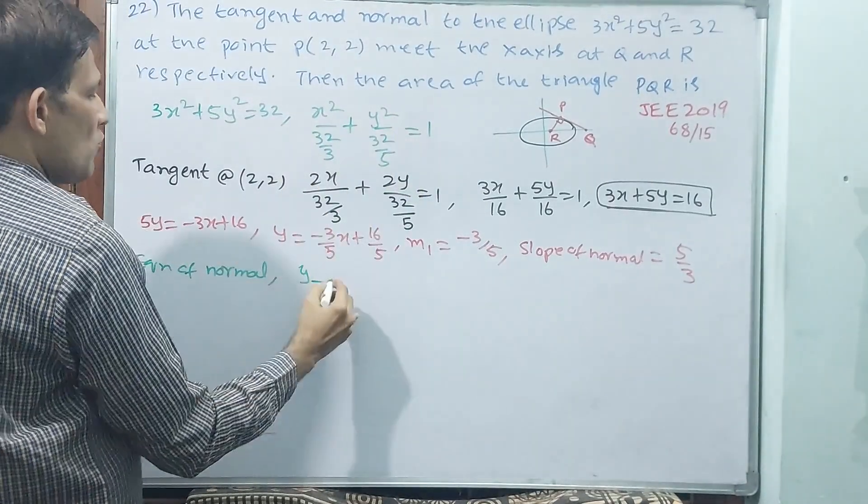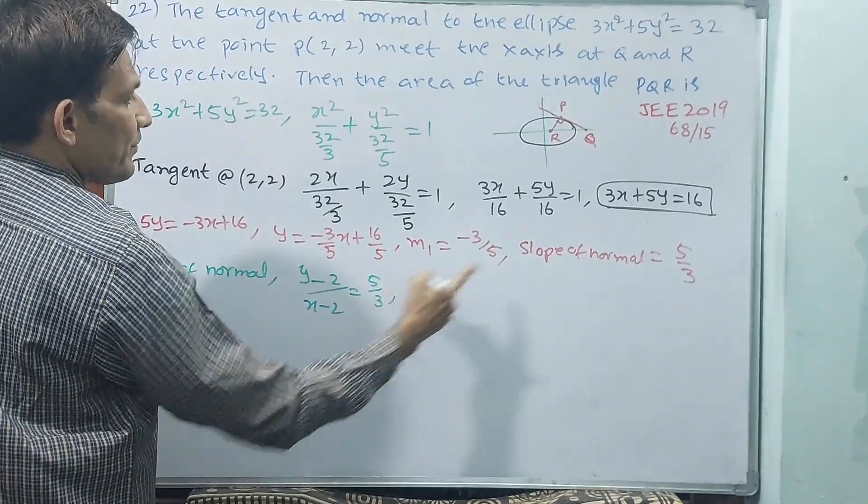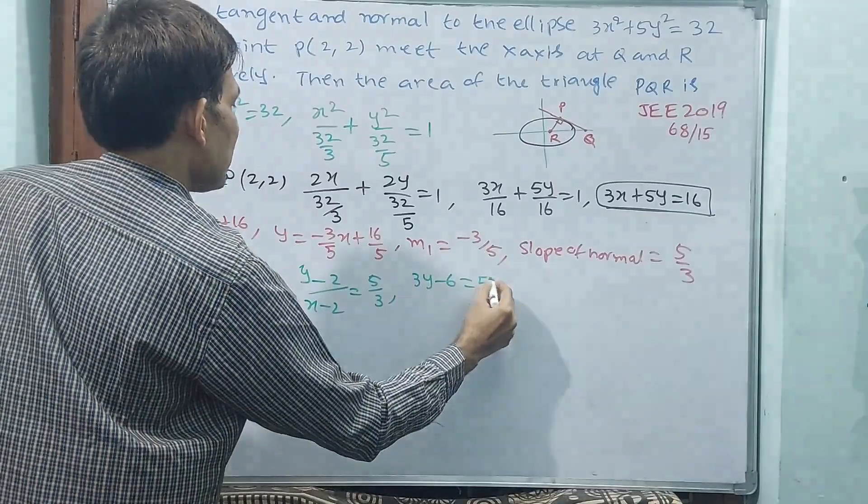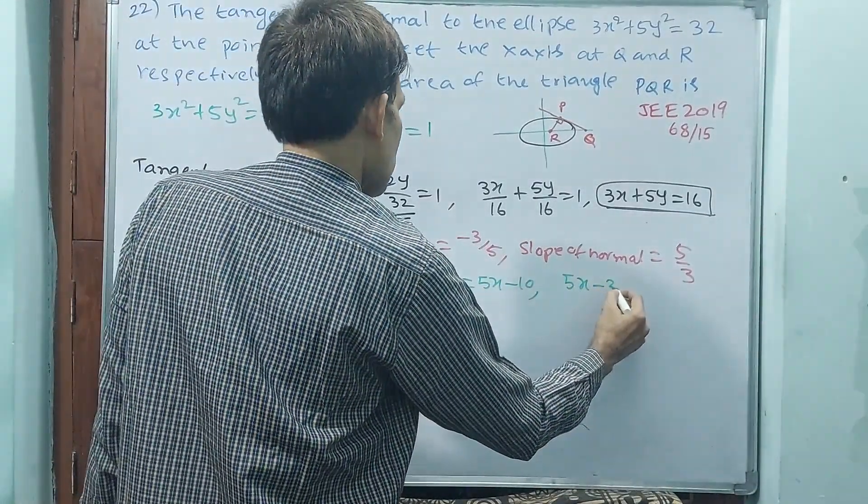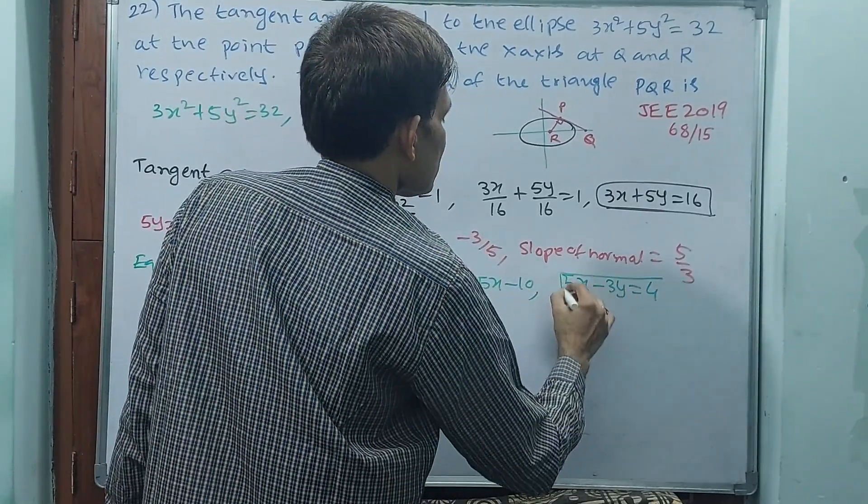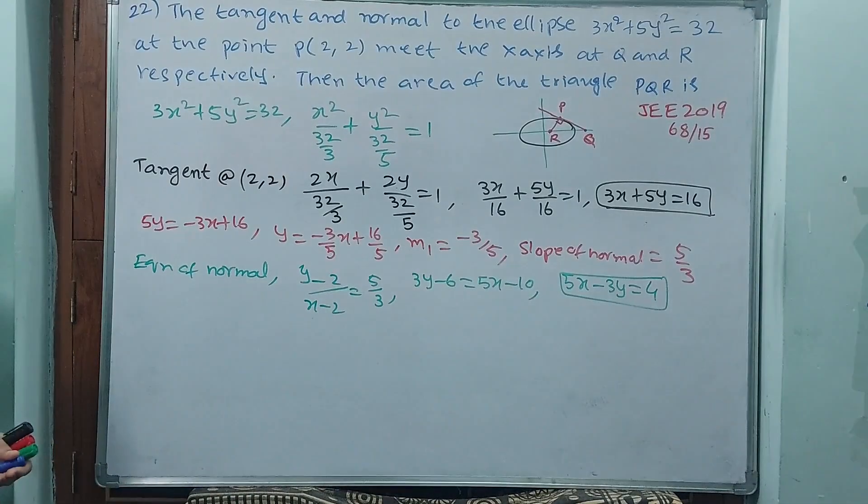Equation of normal: (y minus 2)/(x minus 2) is equal to 5/3. 3y minus 6 is equal to 5x minus 10, or 5x minus 3y is equal to 10 minus 6 is 4. See these two are equations, tangent equation, normal equation.